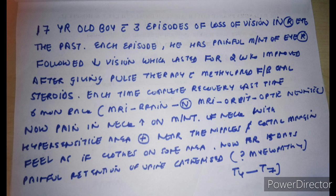Each episode lasted for one to two weeks and improved after giving pulse therapy with methylprednisolone followed by oral steroids, with complete recovery each time. Six months back, his MRI brain was normal and MRI orbit showed optic neuritis.